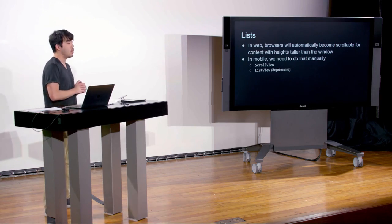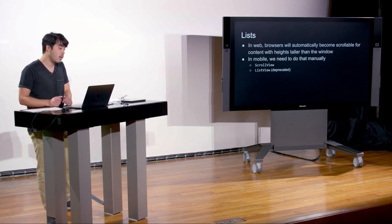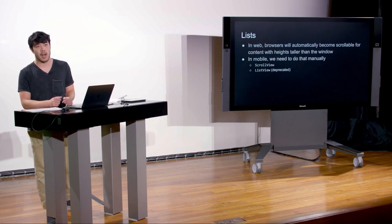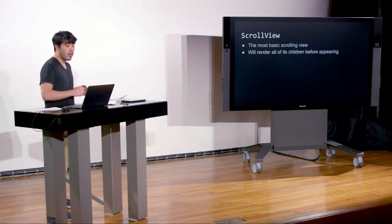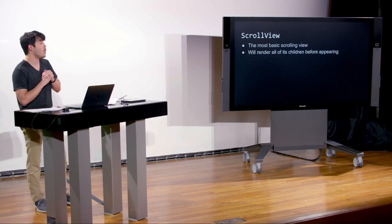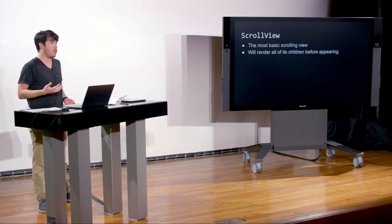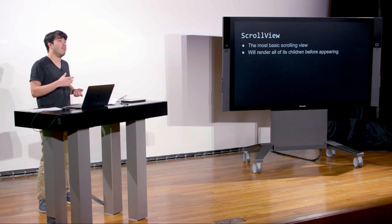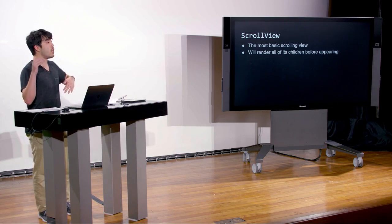There was something called ListView — if you see that in source code or libraries, it used to exist but is deprecated and not actively used anymore. To replace it, there are things called FlatList and SectionList, which we'll look at shortly. The ScrollView is the most basic scrolling view and will actually render all of its children before appearing. If a view overflows the page, you can't see content beyond the window — but with ScrollView, it renders all its children and lets you scroll back and forth.